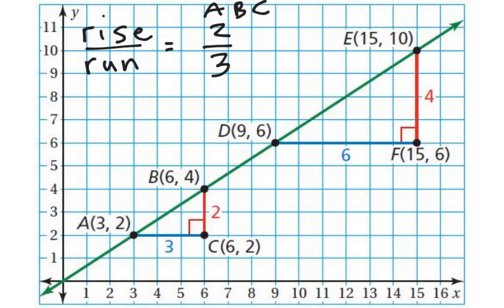In the other triangle, DEF, the rise over run ratio is 4 over 6, but that simplifies to 2 thirds. And notice, then, that the slope is the same between these two right triangles that lie on this green line.